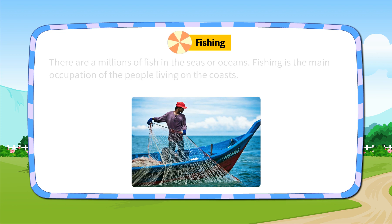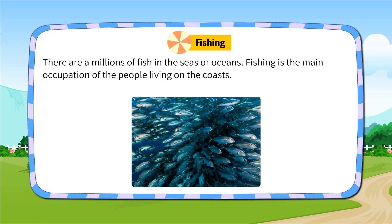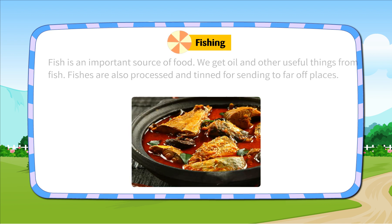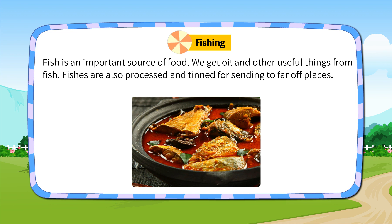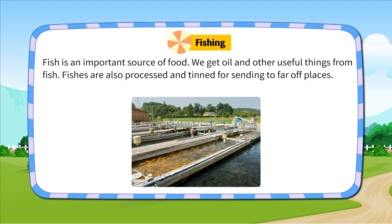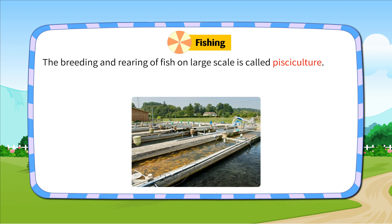Fishing. There are millions of fish in the seas or oceans. Fishing is the main occupation of the people living on the coast. Fish is an important source of food. We get oil and other useful things from fish. Fishes are also processed and tinned for sending to far-off places. The breeding and rearing of fish on a large scale is called pisciculture.